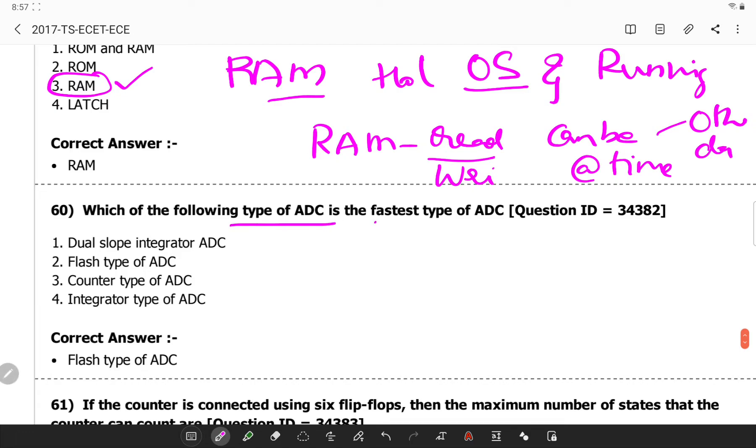Next, which of the following type of ADC is fastest? I will give you a table which you have to remember. We have four types: Counter type, SAR, flash type, and dual slope.